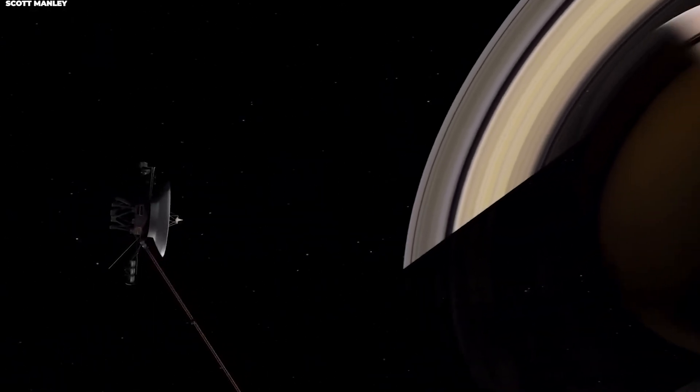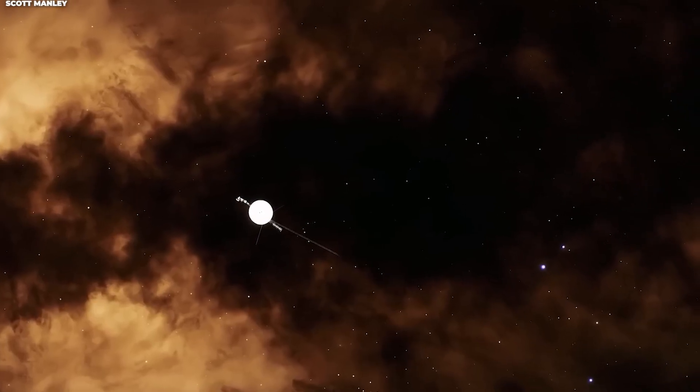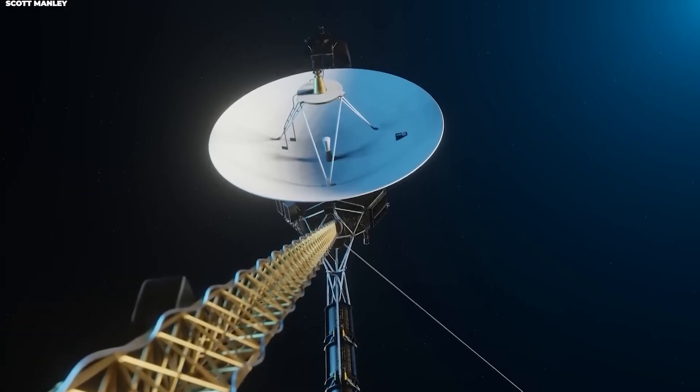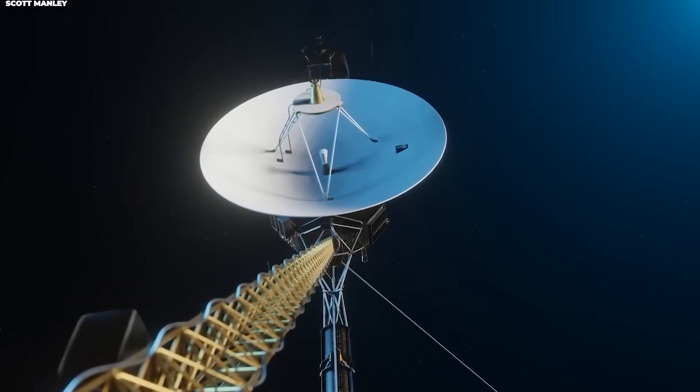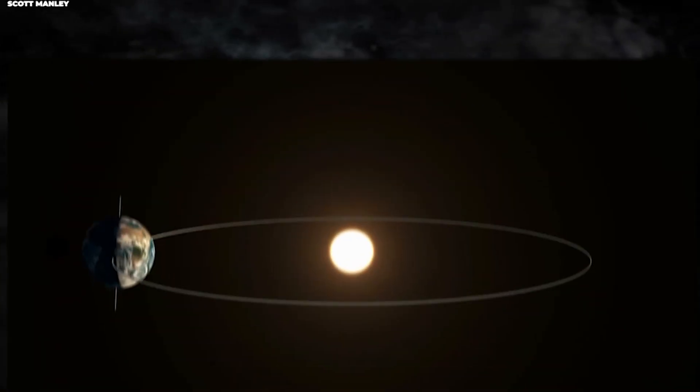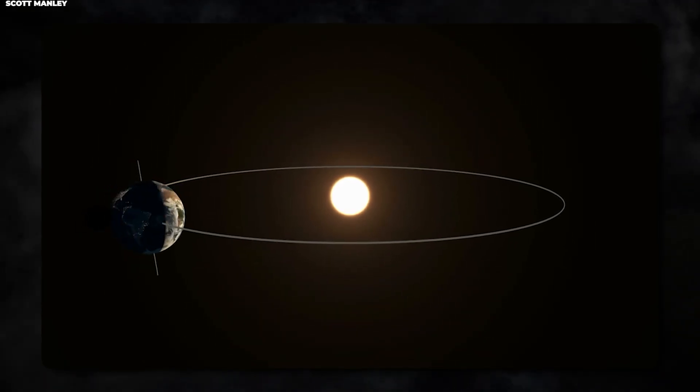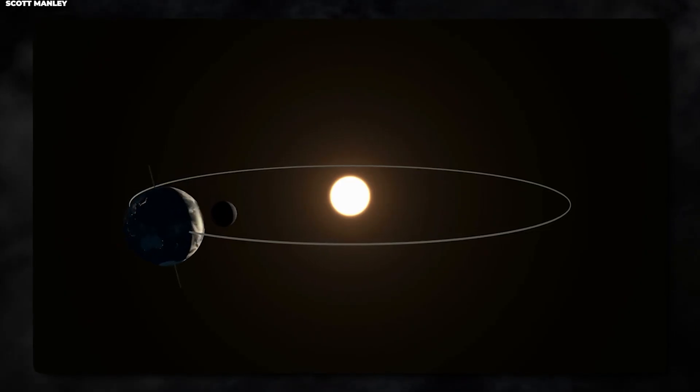First, let's talk about timing and geometry. Even though we say the comet passed by Voyager 1, the actual closest approach was still several astronomical units away. An astronomical unit, or AU, is the distance from the Earth to the sun, about 93 million miles.